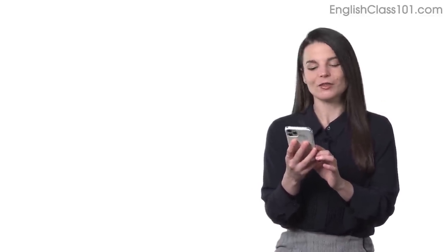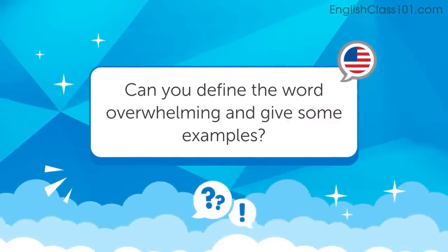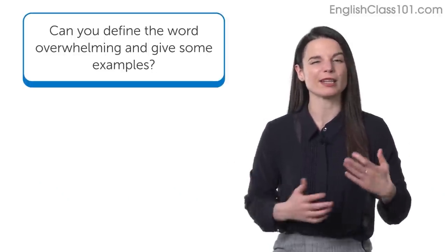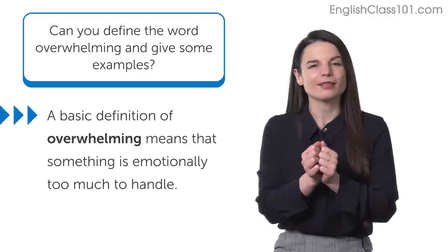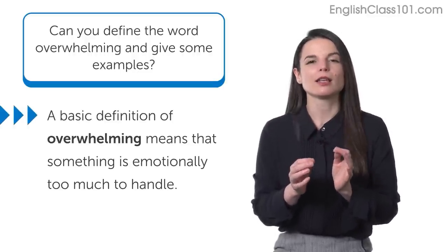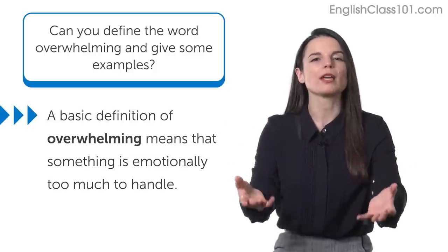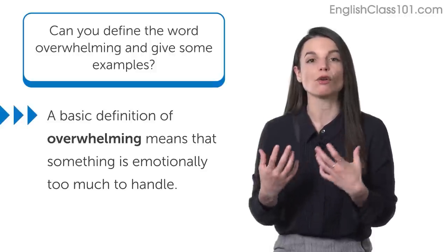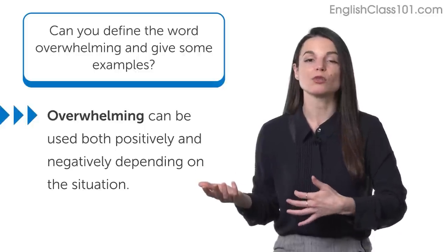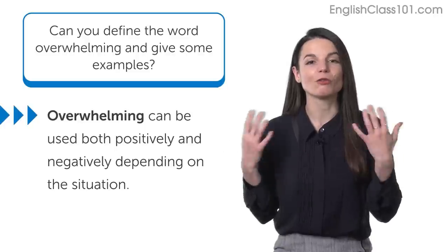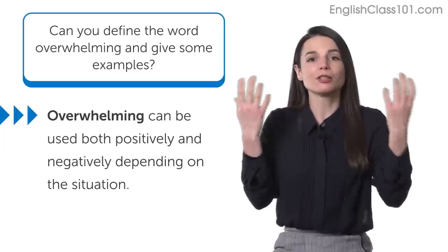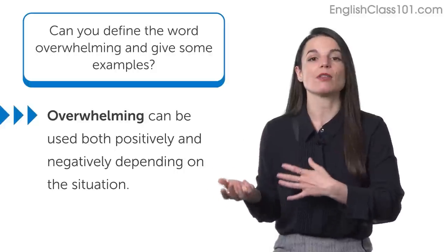Next question comes from Lisa. Lisa asks: can you give me a definition of 'overwhelming' and some examples? Great question. At its core, overwhelming means that something is too much emotionally. When we have an experience and feel really strong emotions, we describe that as overwhelming. We can use this in positive and negative situations. Something that causes a lot of happiness could be overwhelming — you feel so much happiness that you might cry.